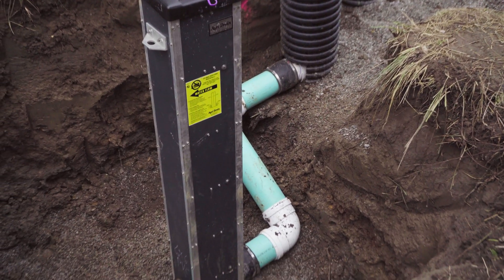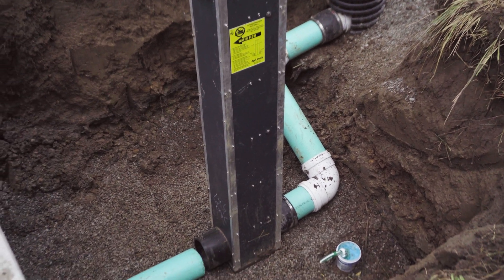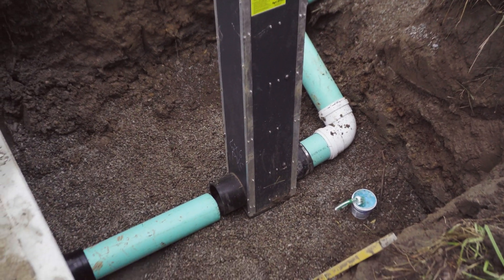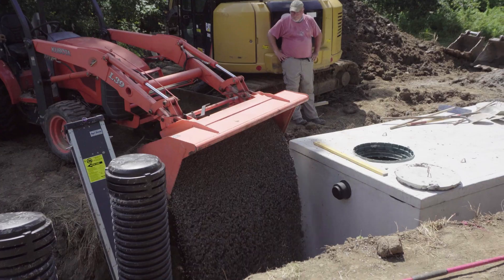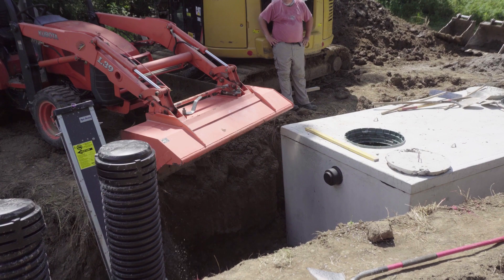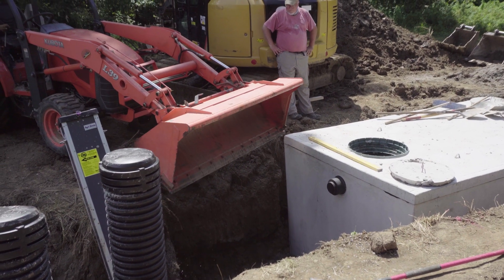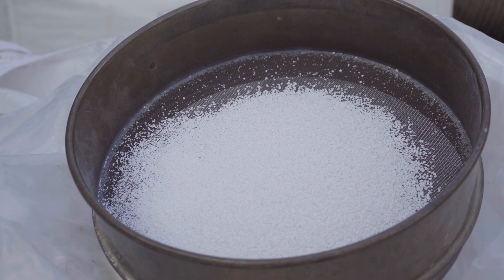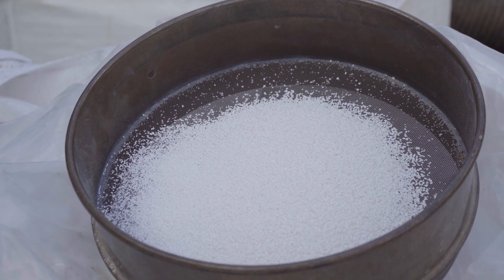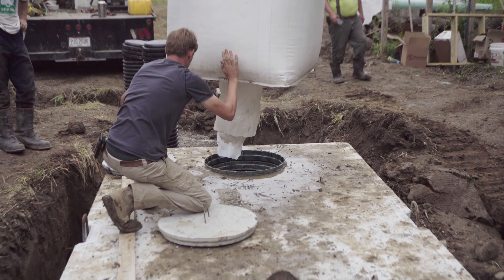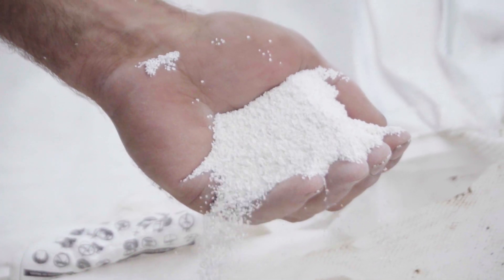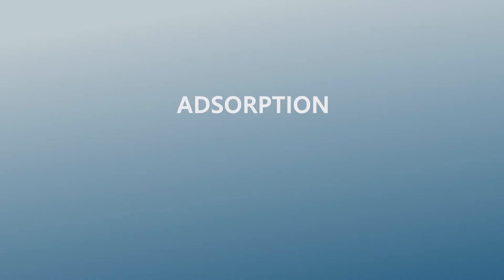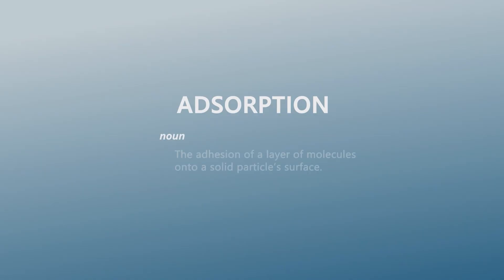At this site, the field has a tile drainage system that carries water to a creek. The idea is to intercept that water before it's discharged to the creek and filter it through a bed of reactive media for trapping that phosphorous. In this case, we're using an aluminum oxide to sorb the dissolved phosphorous and hold it tightly.